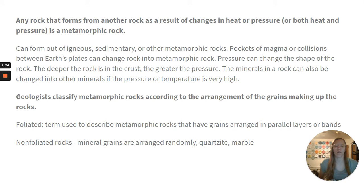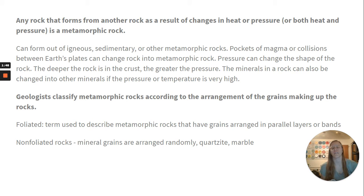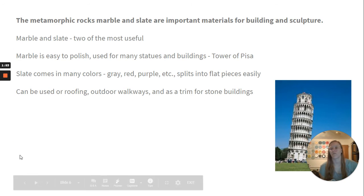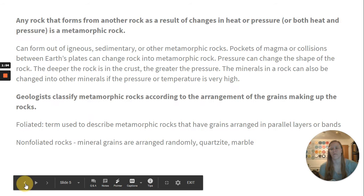Geologists classify metamorphic rocks according to the arrangement of the grains making up the rocks. Foliated is a term used to describe metamorphic rocks that have grains arranged in parallel layers or bands. Non-foliated rocks have mineral grains that are arranged randomly. For example, quartzite and marble.